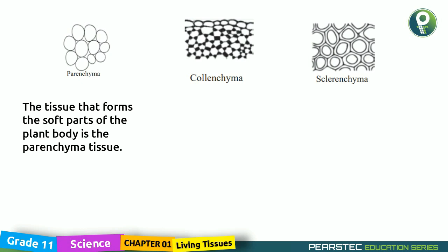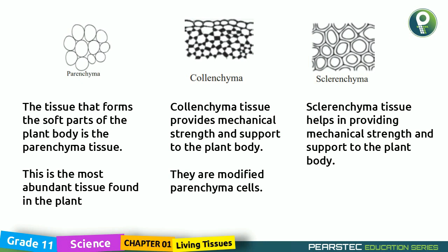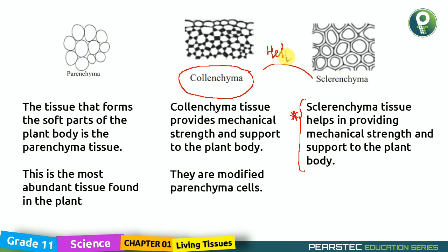The tissue that forms the soft parts of the plant body is Parenchyma Tissue — the most abundant tissue in the plant. Collenchyma Tissue provides mechanical strength and support, and they are modified Parenchyma cells. Sclerenchyma Tissue helps in providing mechanical strength and support. The key difference: Collenchyma is the primary provider of mechanical strength and support, while Sclerenchyma acts as a helper.